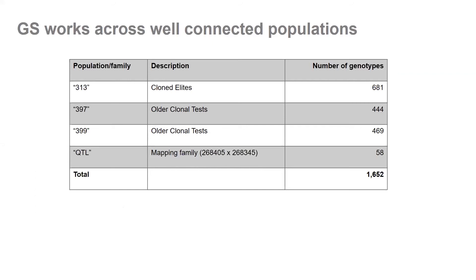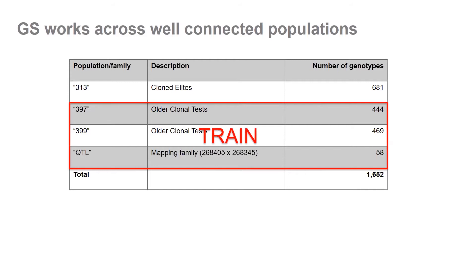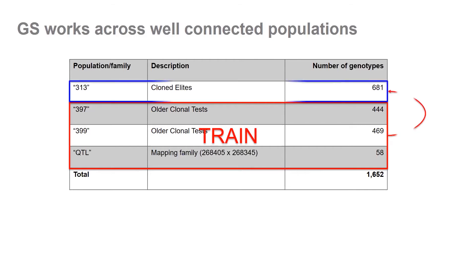We assembled datasets from older clonal tests — the 397 and 399 series — a QTL mapping family used to test within-family prediction, and most importantly the cloned elites, which is the focal population for the Radiata Pine Breeding Company and seed producers. In the first instance, we were trying to answer whether we can train a model based primarily on the older clonal tests and then do predictions within the cloned elites. The answer to that was yes.